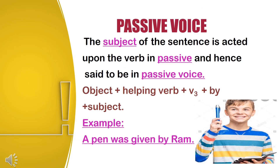Passive voice: when the subject of the sentence is acted upon, the verb is in passive voice. The general formula in passive voice is object plus helping verb plus V3 plus 'by' plus subject. For example, 'A pen was given by Ram.' Here, the pen is the subject but doesn't do the action.